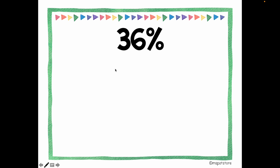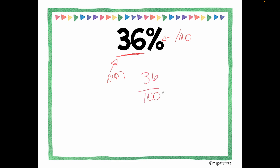Please pause the video and try to rewrite this percent as a fraction. The digits before the percent symbol are your numerator, and percent means out of a hundred. So it will be 36 out of 100. Both are even numbers, so I think about dividing by two, three, or four. Yes — I can divide by four. Thirty-six divided by four is nine, and one hundred divided by four is twenty-five. So 9 over 25 is my final answer.